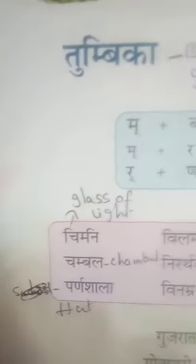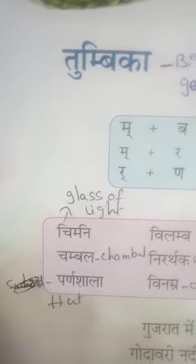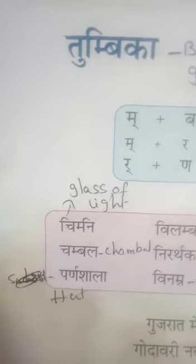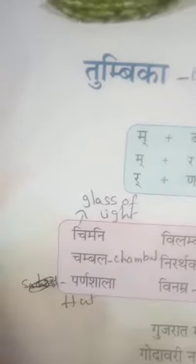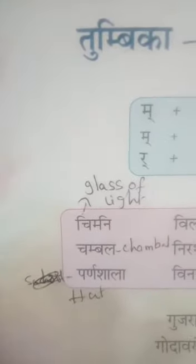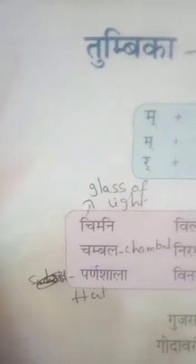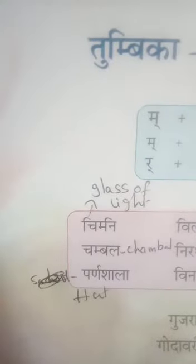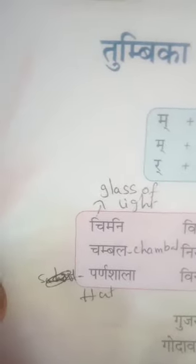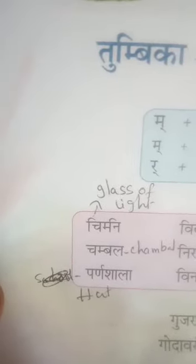Shambal — C-H-A-M-B-A-L. Chambal means a prayer. If you will have a prayer, the meaning of the sun is a prayer.